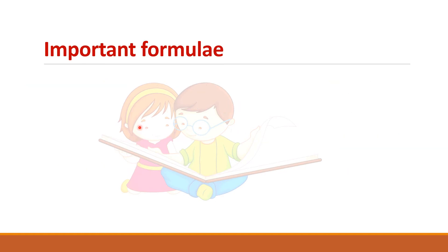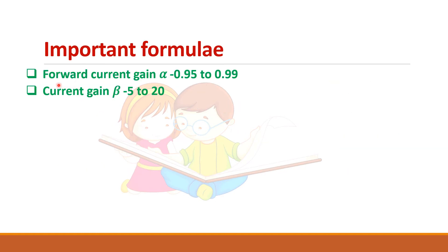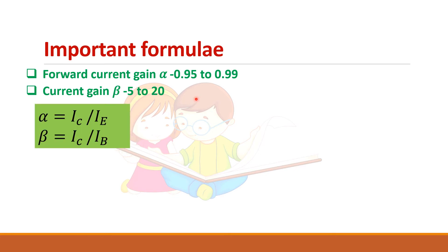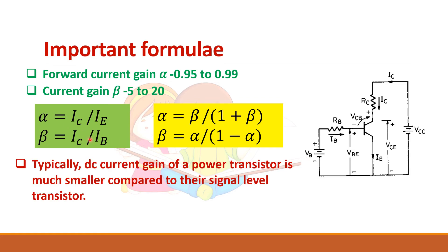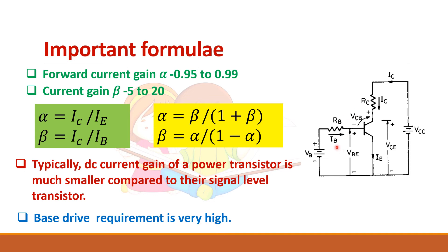Some important formulas: the forward current gain alpha is typically 0.95 to 0.99, and beta for a power BJT is much lower than for signal transistors — only about 5 to 20. The DC current gain is smaller compared to signal-level transistors, and therefore the base drive requirement is very high in a power BJT, which is a drawback.